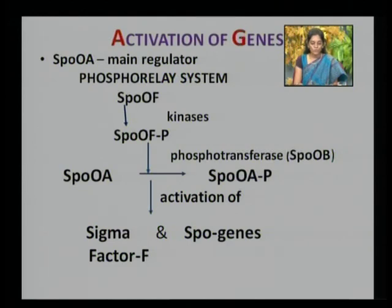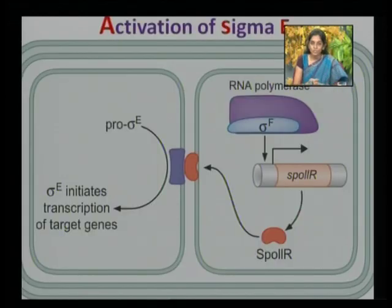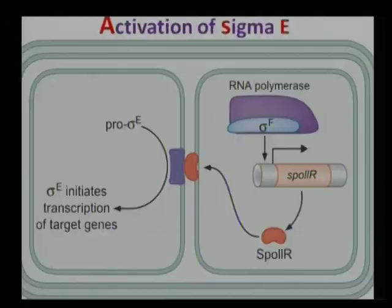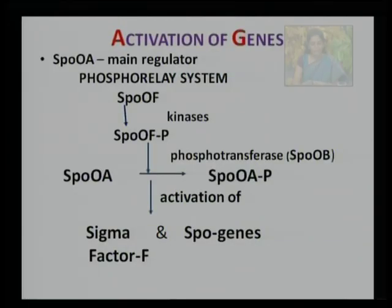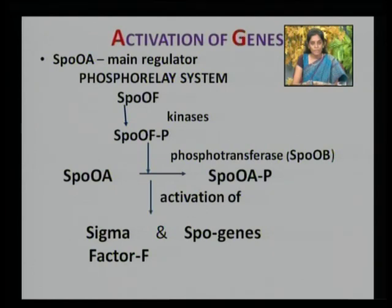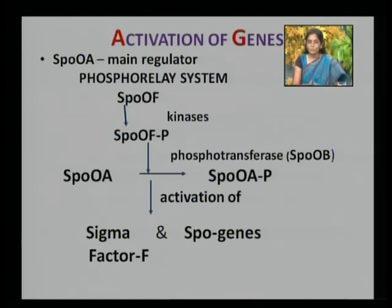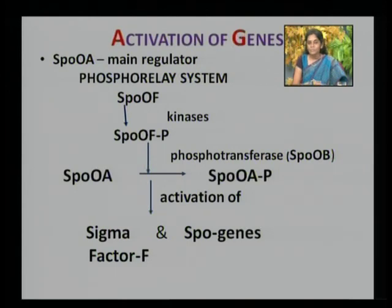The signal input into the phosphorelay system occurs by the action of kinases that phosphorylate a secondary messenger protein, Spo0F. Spo0F serves as a substrate for phosphorylation of Spo0A via Spo0B, which is a phosphotransferase. Once Spo0A is phosphorylated, it activates a number of spore-specific genes required for translation of the proteins involved in sporulation. Collectively, these genes are known as spo genes.